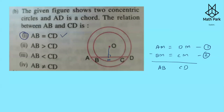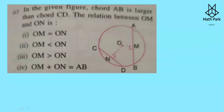Question 3: In the given figure, chord AB is larger than chord CD. We need the relation between OM and ON. Equal chords are equidistant from the center, but these chords are not equal, so OM = ON is ruled out. A larger chord will be closer to the center, so OM is less than ON. That is the correct option.